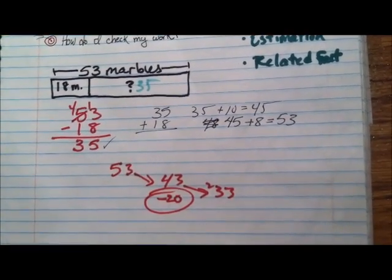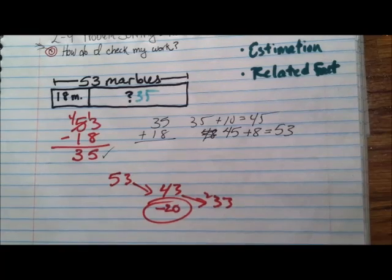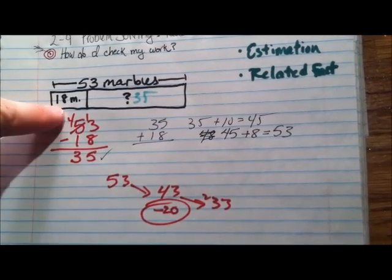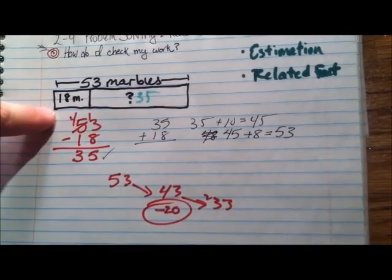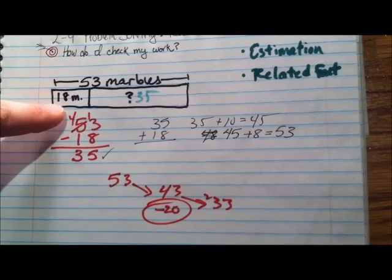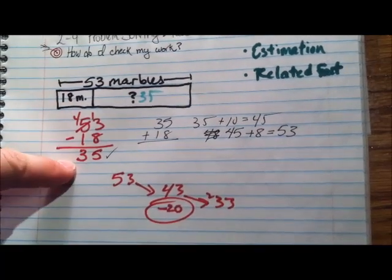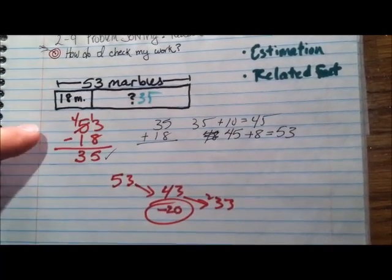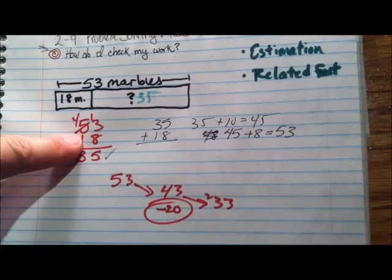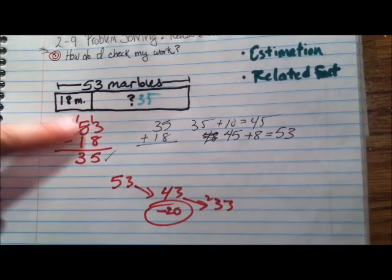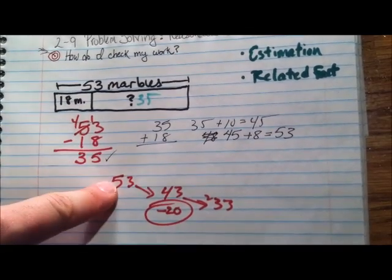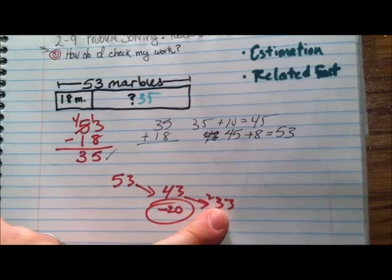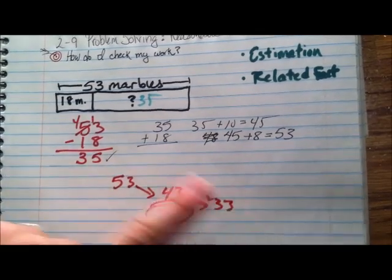Those are two examples of how to check your work. You can use the related fact, where you work backwards and do the opposite operation — in this case I was subtracting, so to check with the related fact I would add. And then I also rounded 18 to 20, subtracted from 53, and got 33. My answer is about 33, which is pretty close to 35.